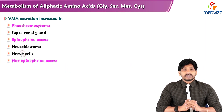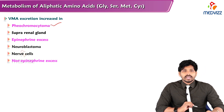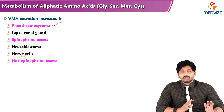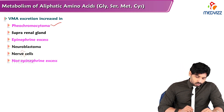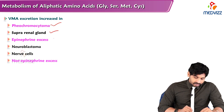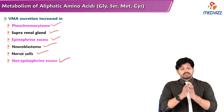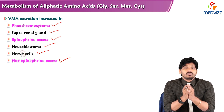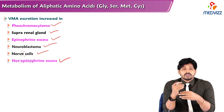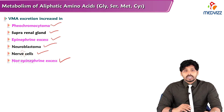VMA excretion is increased in conditions such as pheochromocytoma — a cancerous condition where excess adrenaline hormones are degraded producing more VMA — suprarenal gland dysfunction with excess epinephrine production, neuroblastoma involving nerve cell damage, and norepinephrine excess. In all these conditions, elevated vanillylmandelic acid in urine is a diagnostic indicator.